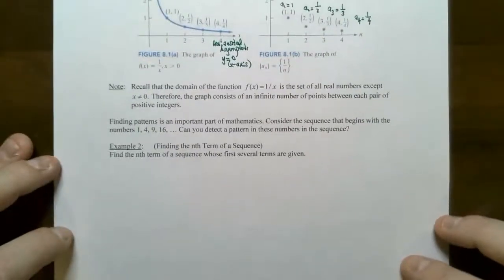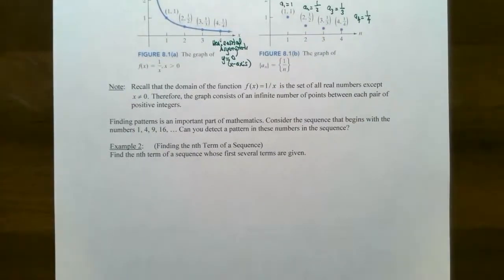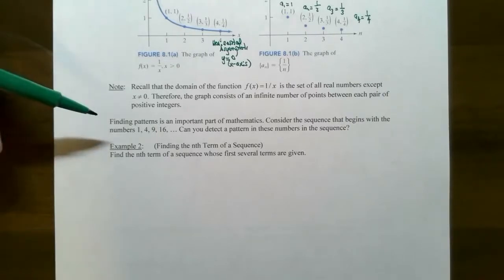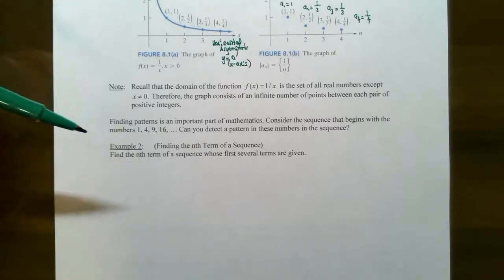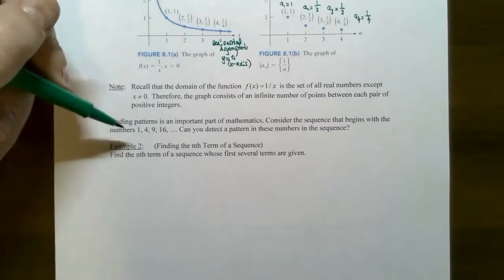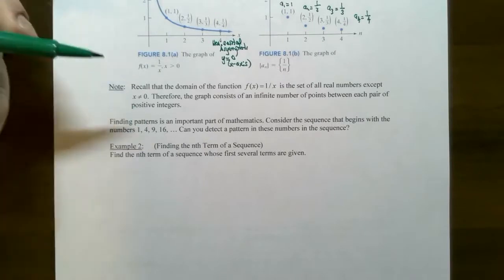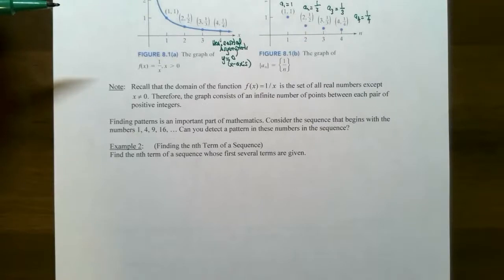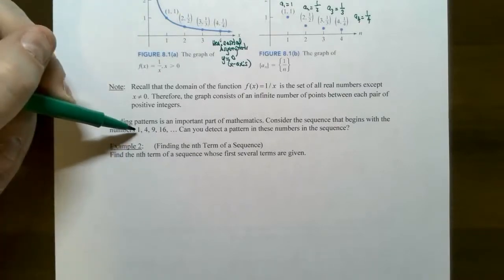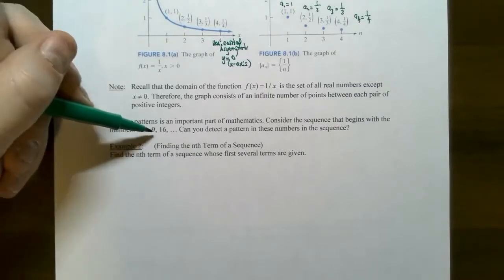The rest of the section is about finding patterns, which is very important in mathematics. Consider the sequence 1, 4, 9, 16, and so on. If we can generate the nth term or general term, we can find any term — like the 15th term — without listing all previous terms. These numbers are perfect squares: 1², 2², 3², and so on.